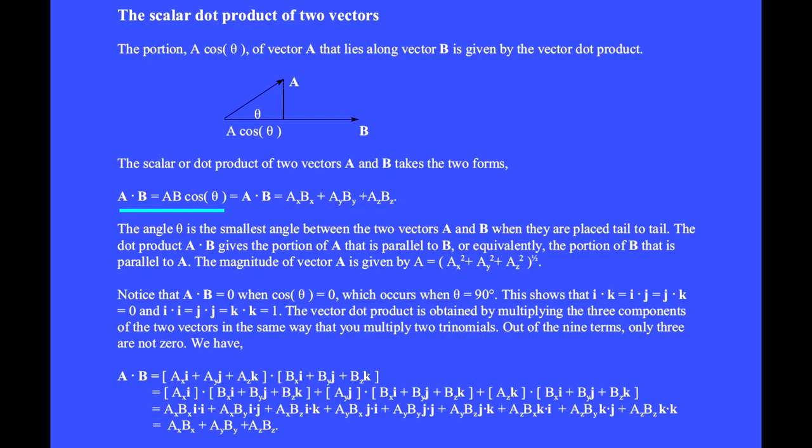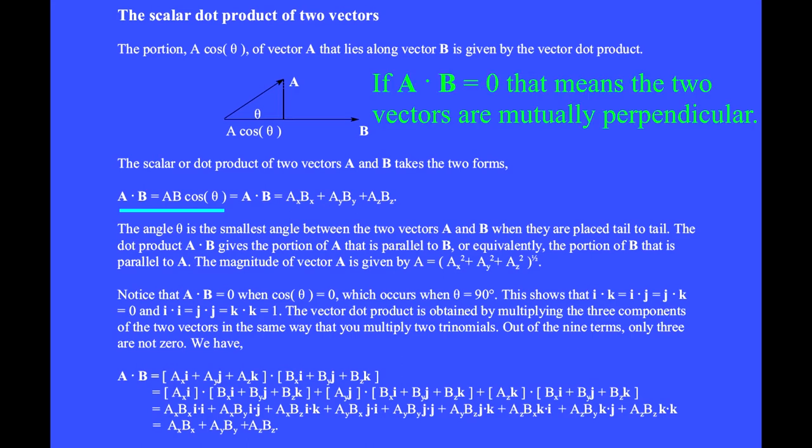Notice that A dot B equals zero when cosine theta equals zero, which occurs when theta equals 90 degrees. If the dot product of two vectors is zero, that means the two vectors are mutually perpendicular.